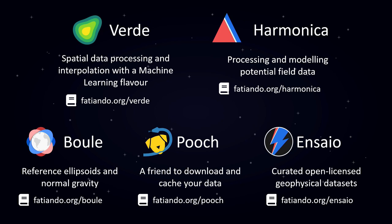Currently we have Verde, a library for spatial data processing and interpolation with a machine learning flavor. We have Harmonica, which is all about processing and modeling potential field data. We also have Boule, a tiny library that allows us to define reference ellipsoids like the WGS84 and perform coordinate conversions and compute normal gravity. Then we have Pooch, a tool for downloading and caching data from the web. And Ensaio offers curated open license datasets useful for teaching, tutorials, and probing our code — it actually uses Pooch under the hood.